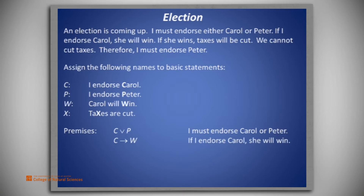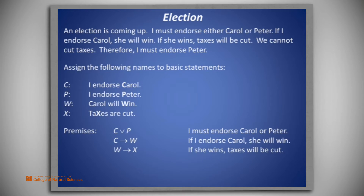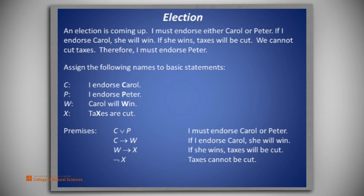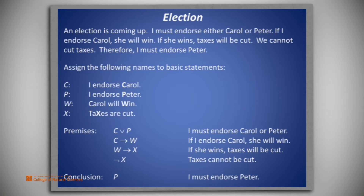C implies W — that is, if I endorse Carol, she will win. W implies X — that is, if she wins, taxes will be cut. And not X — taxes cannot be cut. The conclusion to be drawn is P, that is, I must endorse Peter.